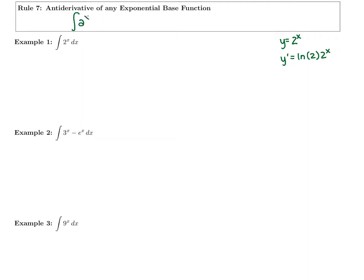So in general, if we have the antiderivative of a to the x dx, now we know that a has to be positive and it has to be bigger than 1. If you have a base a where it's bigger than 1, the antiderivative is going to be a to the x divided by ln of a plus c.